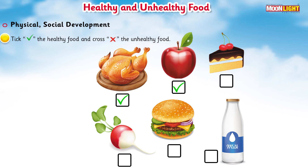Now moving to the next picture — this is a cake, a pastry. You can see that this is a bakery item and it is unhealthy for our health. So we will mark a cross with red color because it is an unhealthy food.